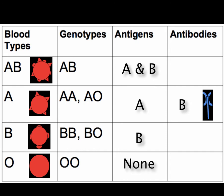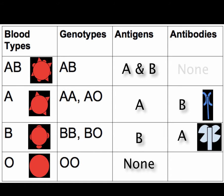Think about the other blood types and what antibodies they make. If you're B blood type, you're not going to make antibodies against your own blood type, but you will make antibodies against A. For AB blood type, since you make both A and B antigens, you don't make antibodies against A or B — otherwise you'd attack your own red blood cells. For O blood type, since they have no antigens, both A and B are considered foreign, so they make antibodies against both A and B antigens.